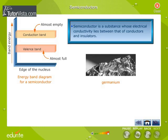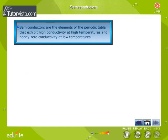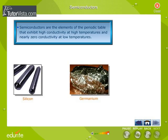At low temperatures, a semiconductor behaves as an insulator because of an empty conduction band and full valence band. Semiconductors are elements of the periodic table that exhibit high conductivity at high temperatures and nearly zero conductivity at low temperatures. Silicon and germanium are the two important semiconductors.